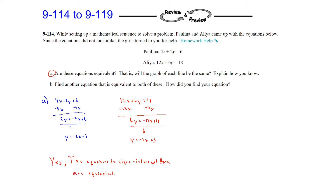Here's a second way to look at it. If you take Paulina's equation and multiply it by 3, that gives you 12x plus 6y equals 18 — exactly the same as Aaliyah's. So even without writing them in slope-intercept form, by multiplying Paulina's equation by 3 we can see the equations are equivalent.